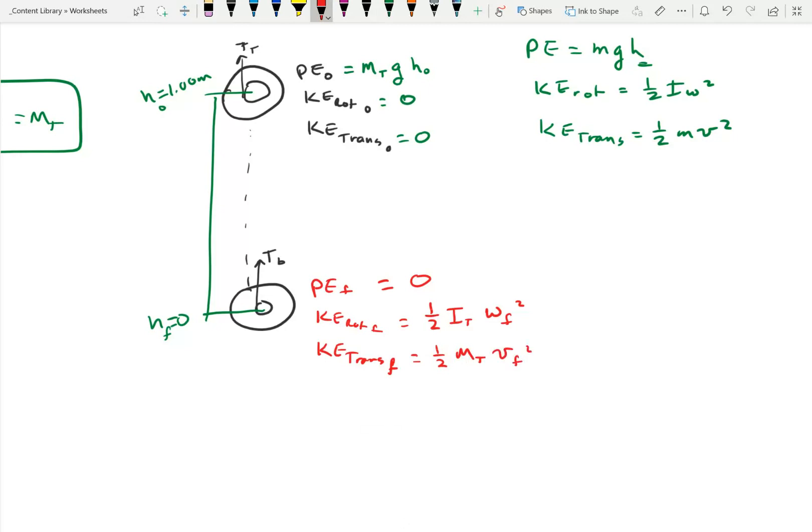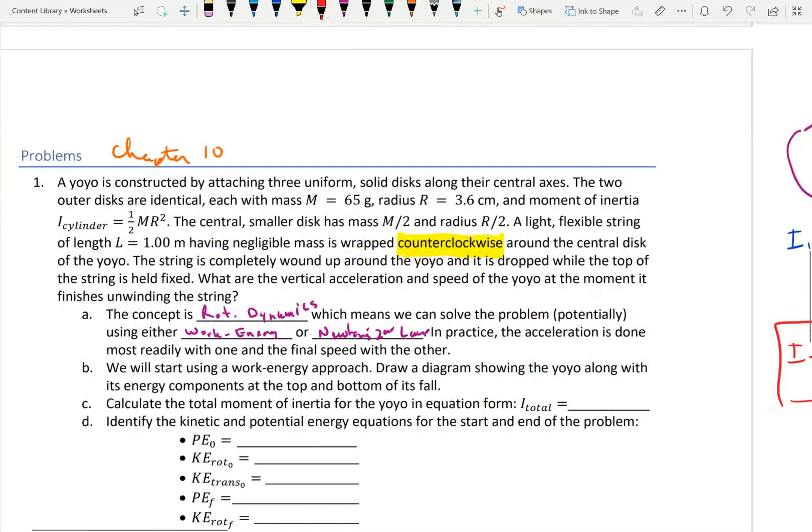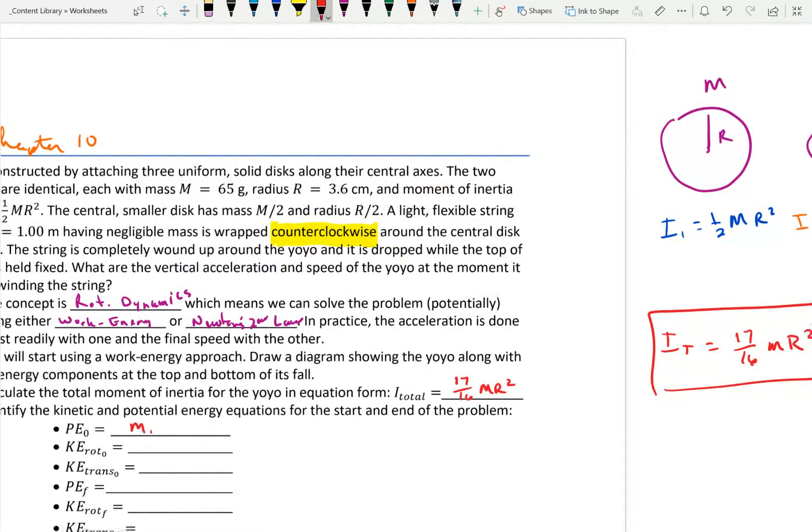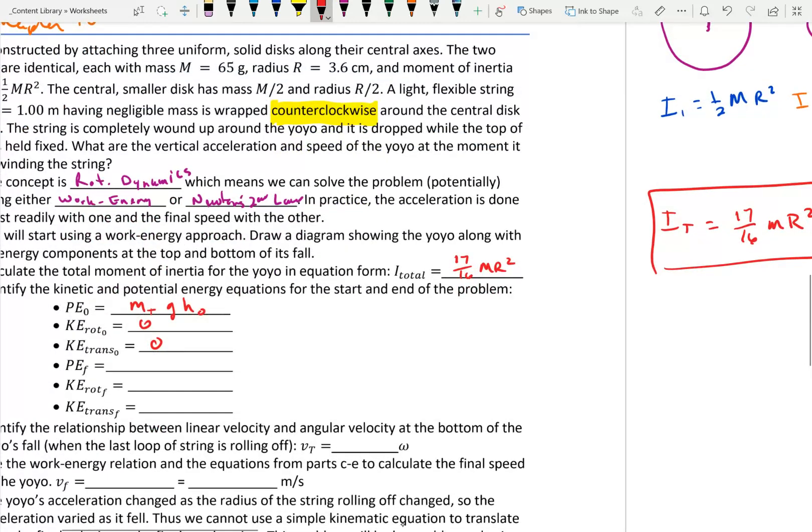Now, to make sure we don't forget, kinetic energy rotational is equal to one half I omega squared, and kinetic energy translational is equal to one half mass times speed squared. So, since the rotation speed were 0 to begin with, those were both 0. Now, for the finals, potential energy final, since our H final is 0, that's 0. But rotational kinetic energy, that's going to be one half I total omega final squared, and translational, one half mass total V final squared.